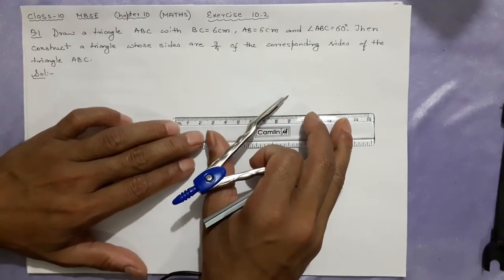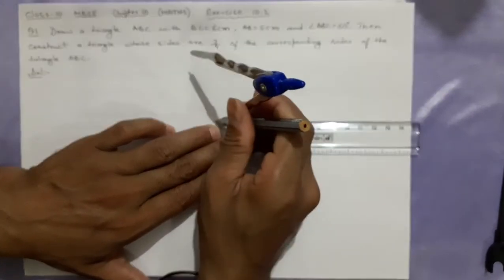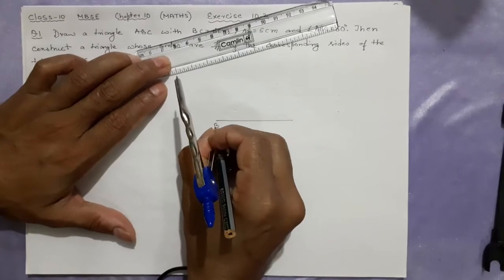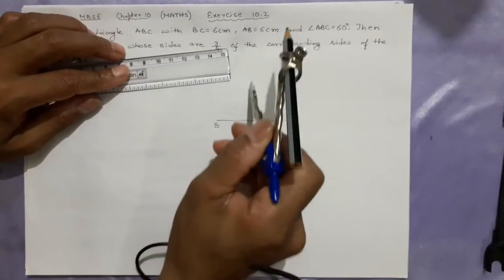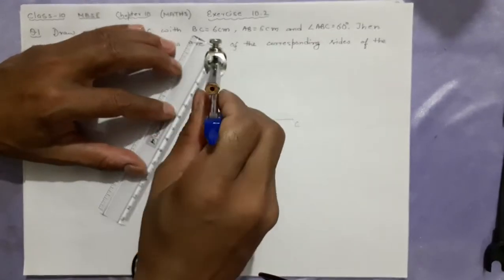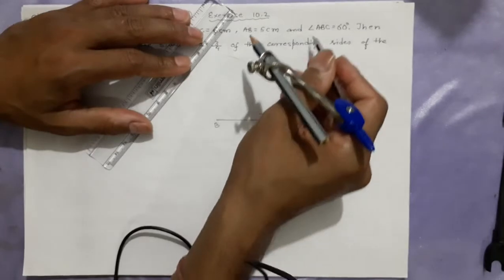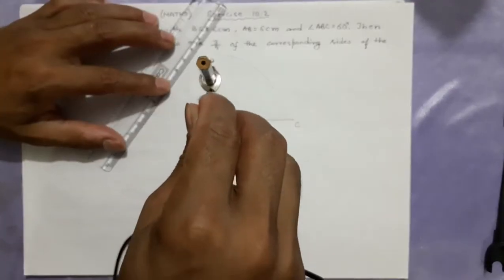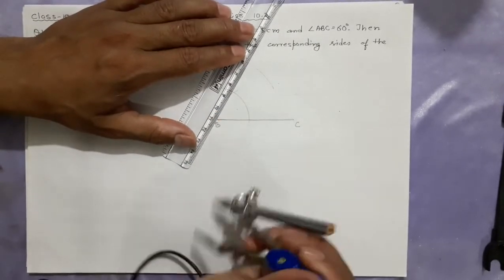First, you make BC which is 6 centimeters. Mark B and C. After this, AB should be 5 centimeters — A will be somewhere such that BA equals 5 centimeters. Take a 5-centimeter arc and cut it. Now angle ABC needs to be 60 degrees, so we make this 60-degree angle here. You could first make the 60-degree angle and then cut the arc — either way gives the same result.